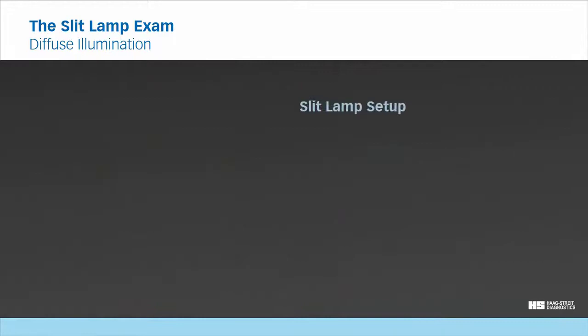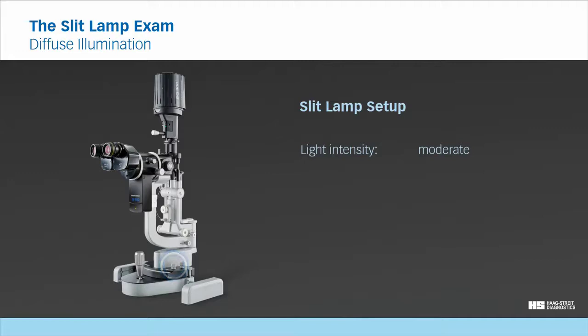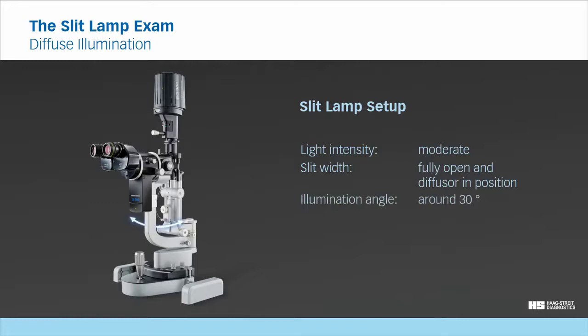Slit lamp setup. To set up the slit lamp, choose a moderate light intensity. Bring the diffuser in position and open the slit completely. Alternatively, you can switch on a dedicated background illumination. Select an illumination angle somewhere around 30 degrees for ensuring even illumination. We recommend a magnification of 6 times or 10 times.